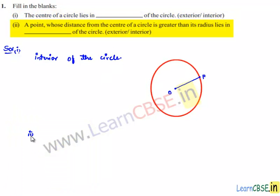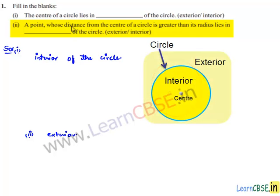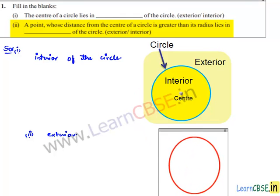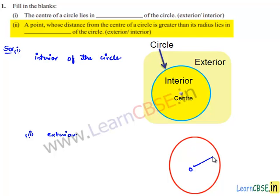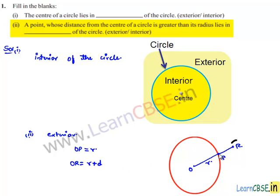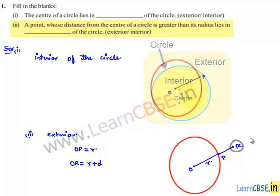Coming to the second bit: a point whose distance from the center of the circle is greater than the radius lies in the exterior of the circle. If we consider a circle with center O, the radius is the distance between the center and any point P on the circle. If we consider a distance greater than R, then that point always lies outside the circle. Therefore, a point whose distance from the center is greater than its radius always lies in the exterior of the circle.